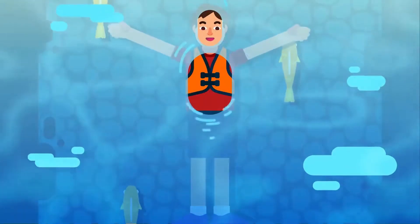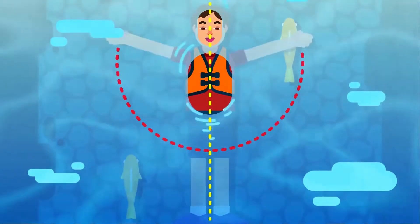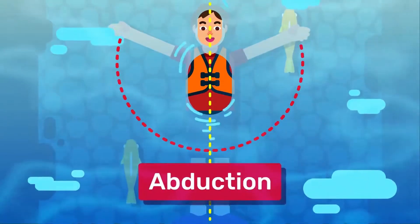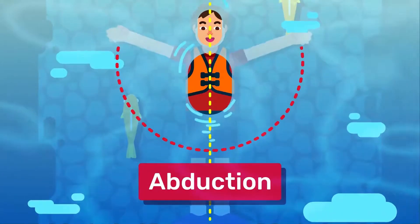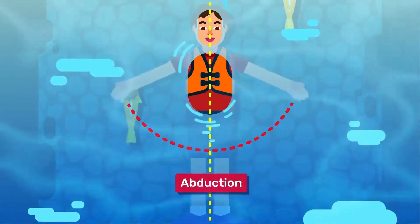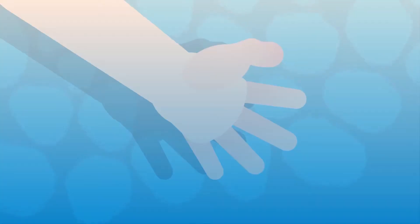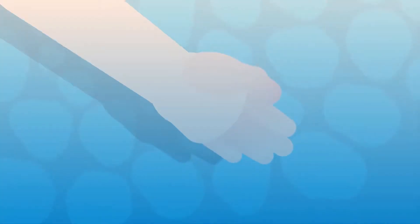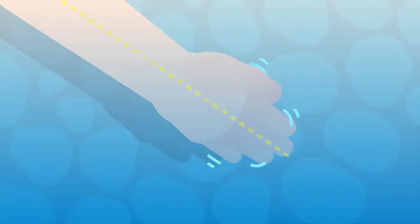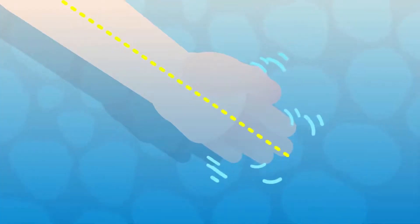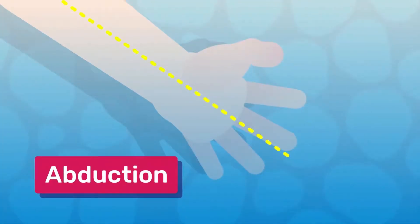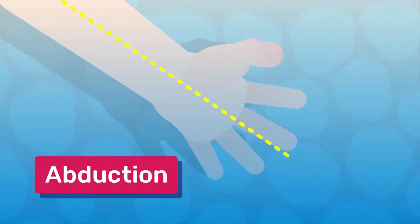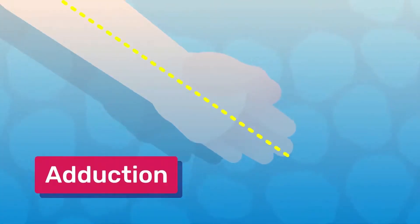If the limbs move away from the median plane of the body, this would be termed abduction. Oppositely, a movement performed towards the plane would be called adduction. In the digits, these terms are used similarly but with different reference points. The abduction of the digits refers to the spreading of the fingers apart, away from the neutrally positioned middle finger. Whereas adduction would be the opposite, bringing the spread fingers towards the middle finger.